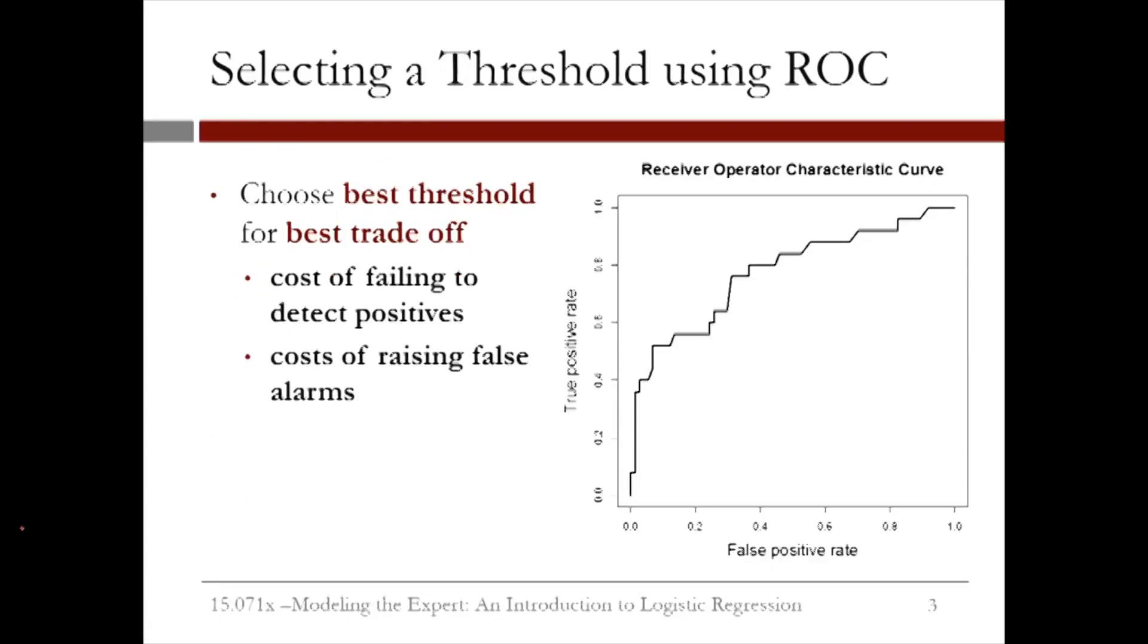So which threshold value should you pick? You should select the best threshold for the trade-off you want to make. If you're more concerned with having a high specificity or low false positive rate, pick the threshold that maximizes the true positive rate while keeping the false positive rate really low.